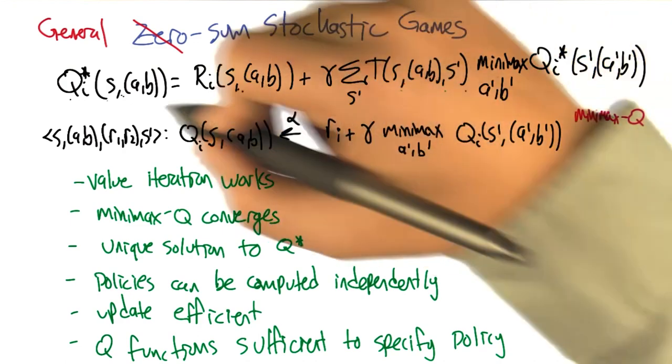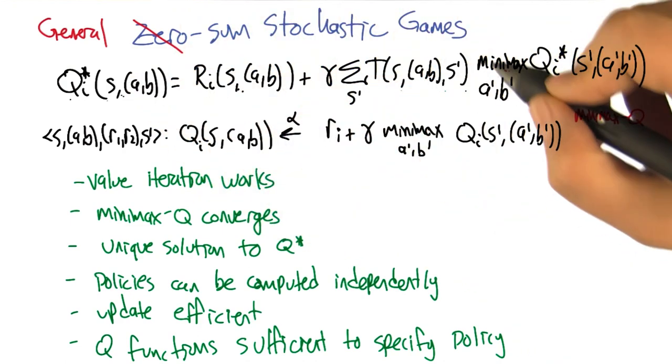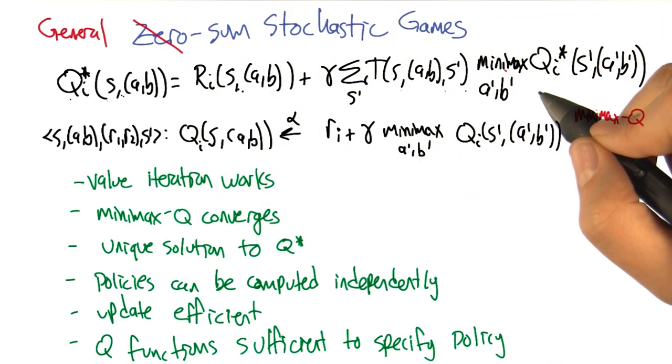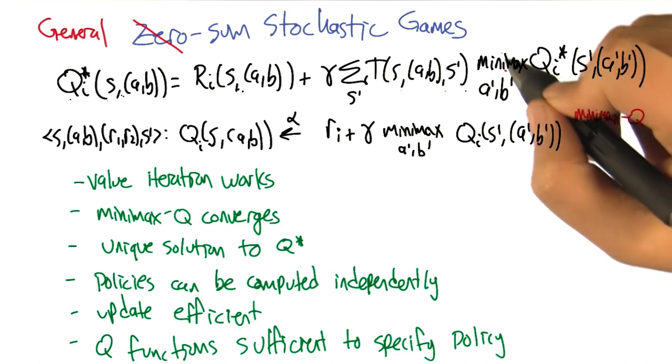So the first thing we need to do is realize we can't really do minimax here anymore, right? Because that doesn't make sense. That only works with zero sum games.